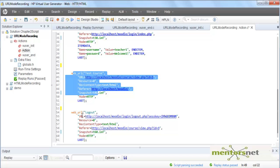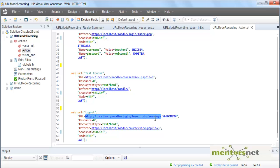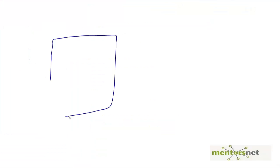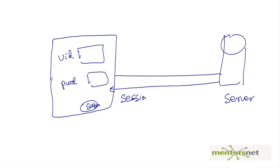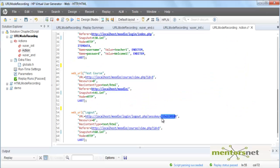Then we moved to the test course and we are logging out. When you look at the logout parameter, the URL is equal to something, and there is something called 'key' equal to some random string. This is how Moodle works. This is your login with your user ID and password sent to the server. The server validates it and returns a session key. In future the server will recognize this client by this session key, which is a randomly generated string.